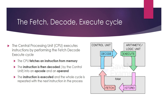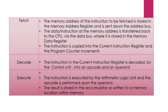The fetch-decode-execute cycle is the model that Von Neumann architecture follows. The control unit fetches data from RAM, decodes it, and executes it. If instructions need to be executed, they are executed and the result is stored back in RAM. This cycle repeats until all instructions have been executed. Specifically: the CPU fetches an instruction from memory; the control unit decodes it into an opcode and operand; the instruction is executed; and the cycle repeats with the next instruction.